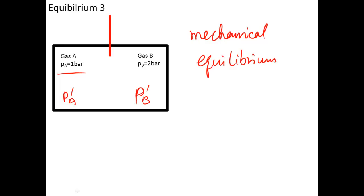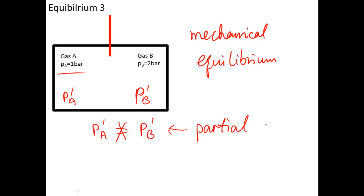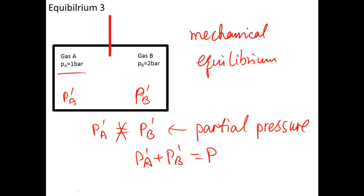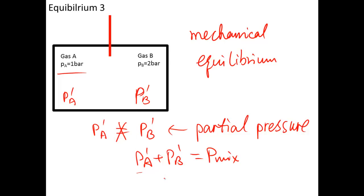Pay attention here — it's a little different from concentration and temperature. At the final state, P_A is not equal to P_B; they have their own values. This is because the pressure here is called partial pressure, and the sum of both partial pressures equals the pressure of the mixture. If you cannot understand this, don't worry — we will talk about this concept later in the topic of gas mixtures.